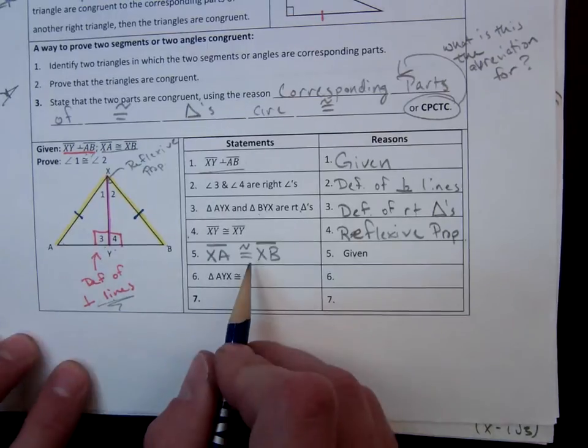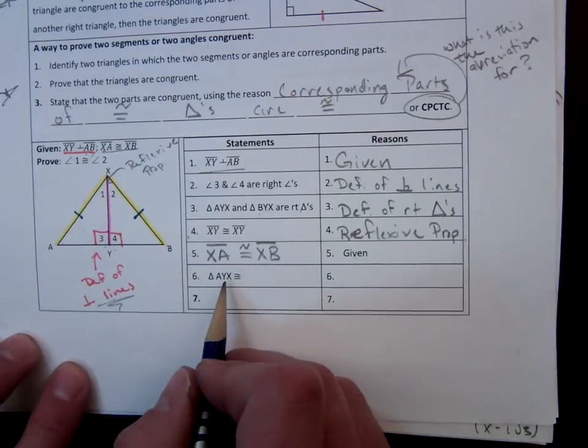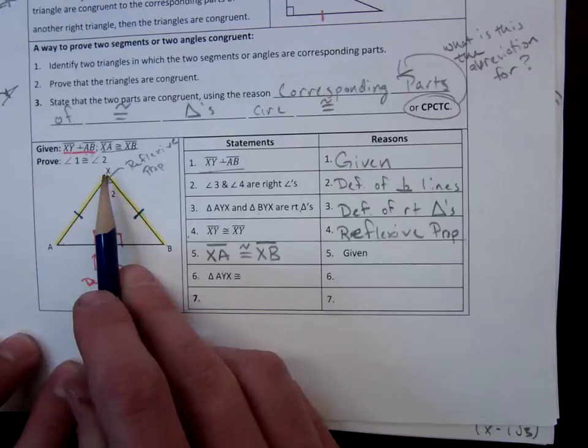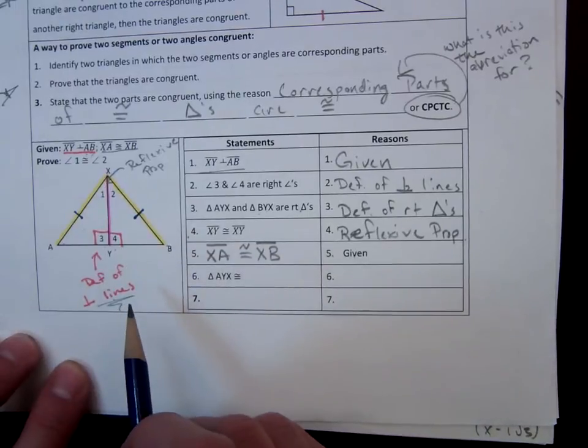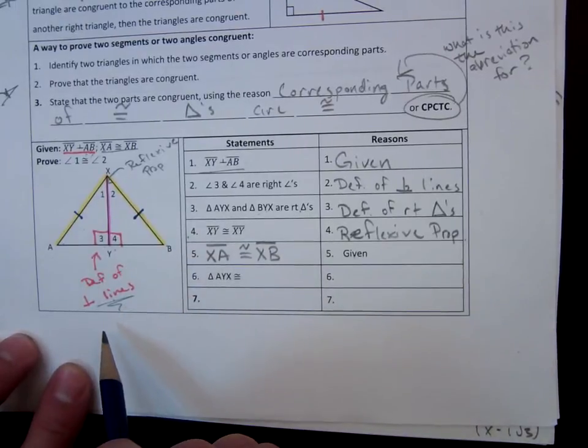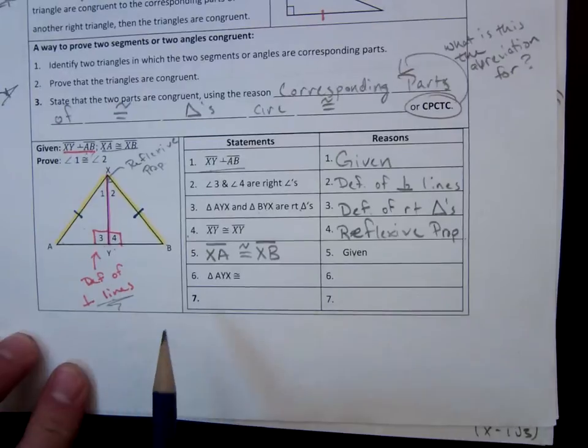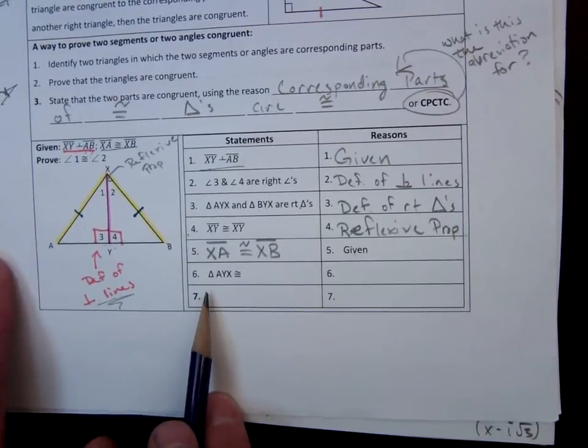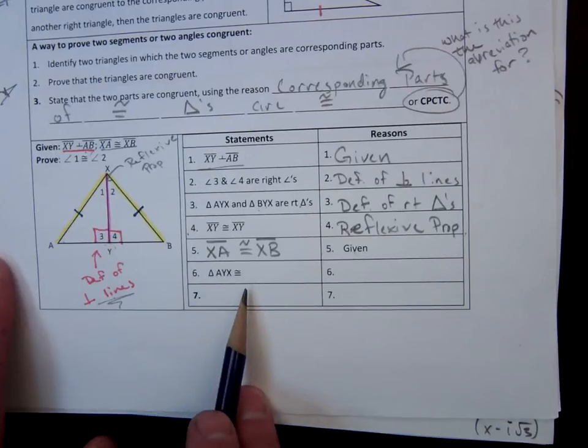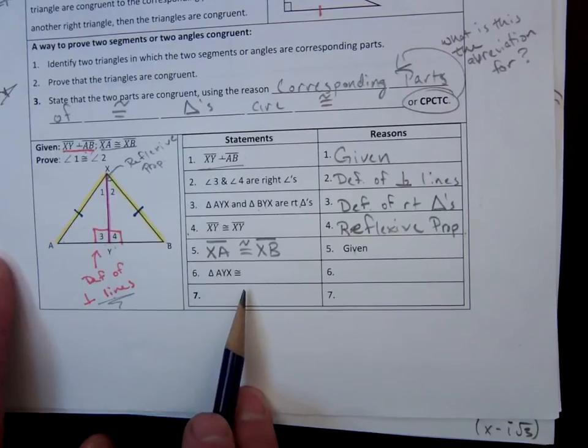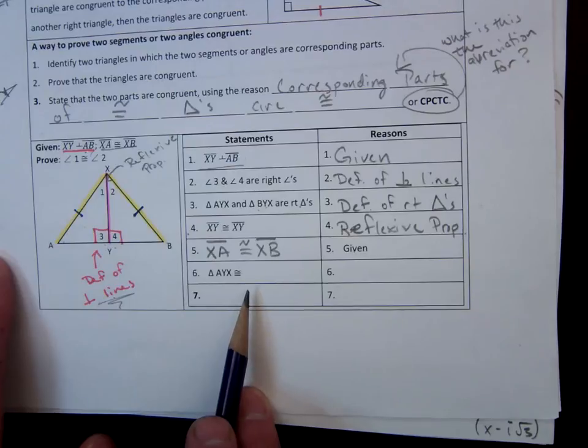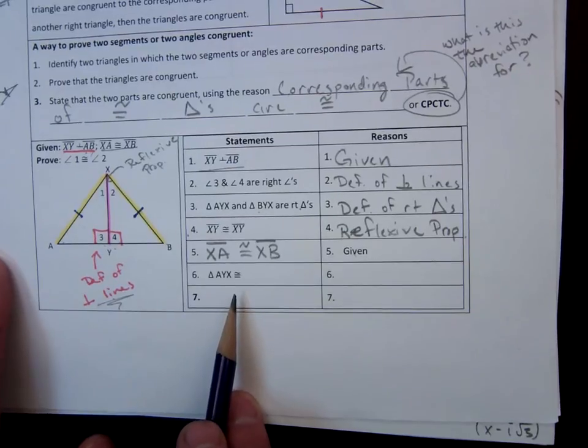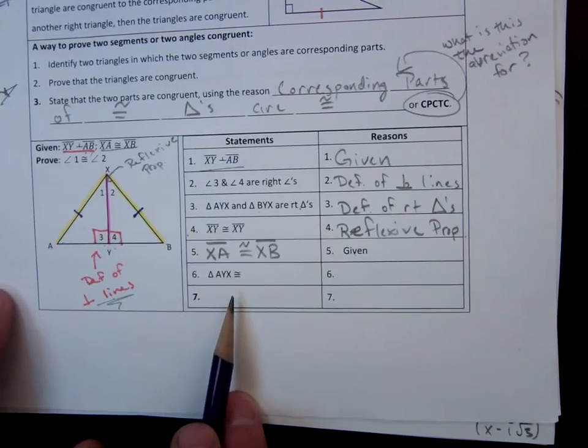Well, based off of that, we should be able to see that AYX is congruent to another triangle. I want you to take a minute and see if you can figure out, or a minute or a few seconds, and you can pause this if you need to, and see if you can figure out, first off, what triangle it should be congruent to. There's a hint from earlier in the proof. And secondly, which theorem we will use to state that those two triangles are congruent.